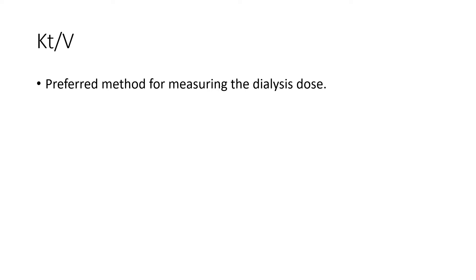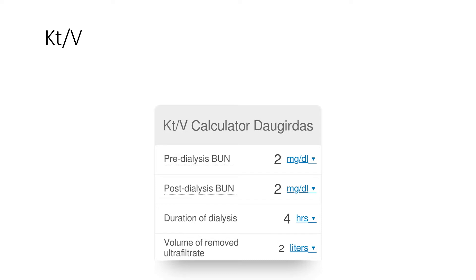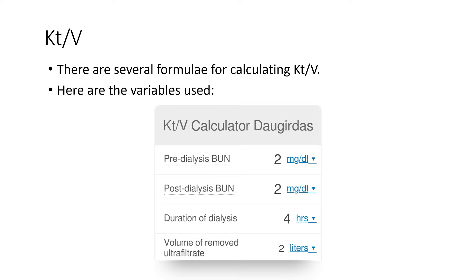Kt/V is generally accepted as the preferred method for measuring dialysis dose. It is a calculated value based on the following variables: K stands for dialyzer clearance, defined as the volume of blood completely cleared of a given solute per unit time. T is the duration of dialysis in minutes, and V is the volume of body water of a patient, which represents the distribution of urea. The variables that go into the calculation include pre-dialysis BUN, post-dialysis BUN, the duration of dialysis, and the volume of fluid removed. So if you have these four variables, you can calculate Kt/V.